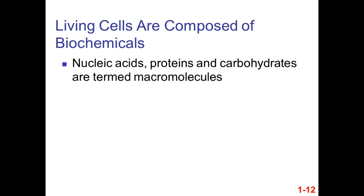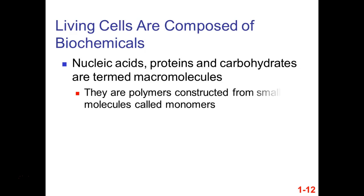The first three macromolecules are also sometimes referred to as polymers — made up of many repeating subunits. The monomer is the amino acid; the polymer is the protein. Sugars are the monomer; carbohydrates or polysaccharides are the polymer. For nucleic acids, the individual repeating subunits are nucleotides.